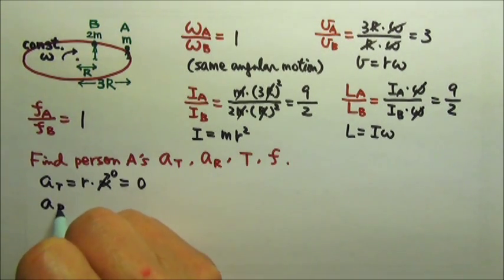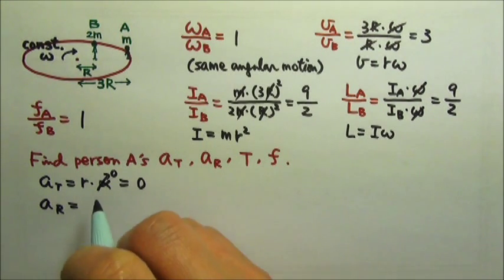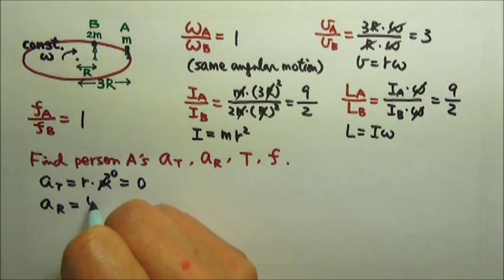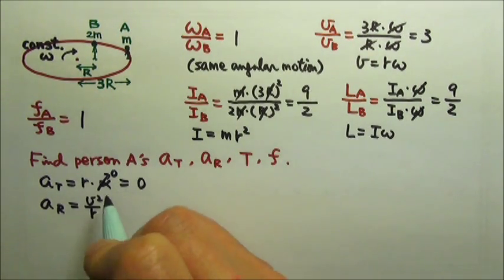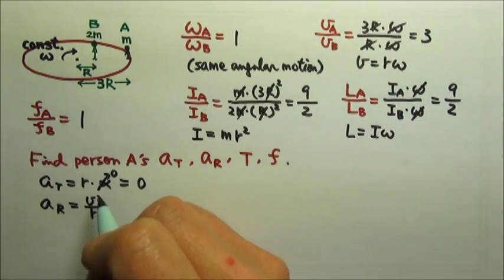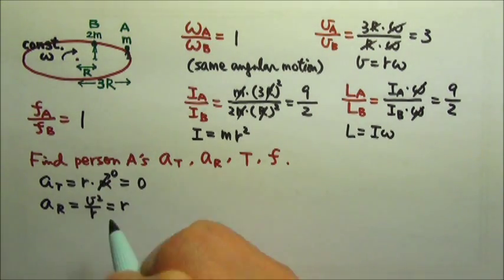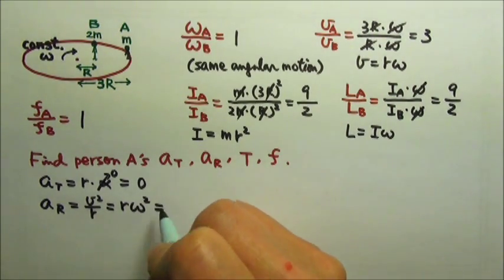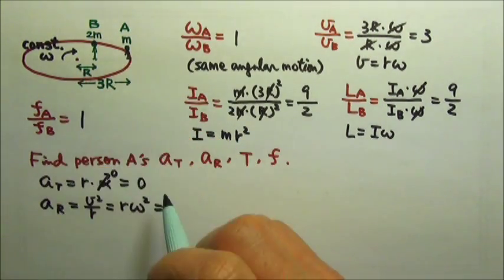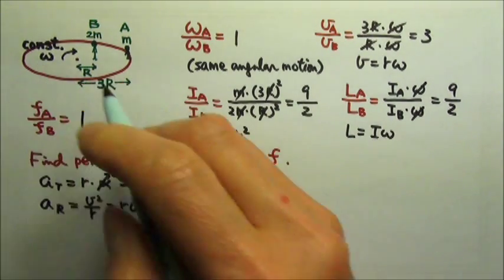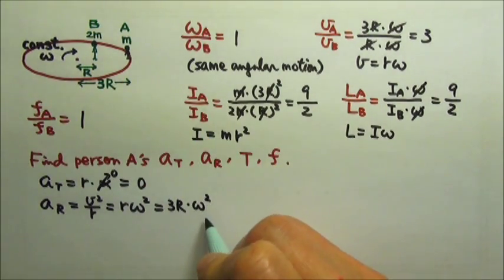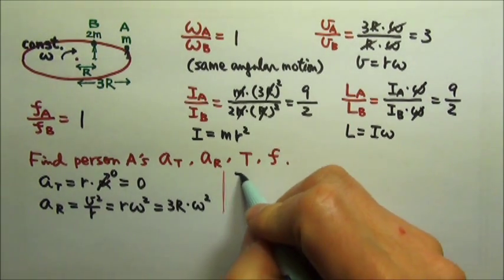For radial acceleration, it is also the centripetal acceleration. It is v squared over r, but in this case, because we have omega, it will be easier to use r times omega squared. So for person A, the r is 3r and the omega is omega. So this is the radial acceleration.